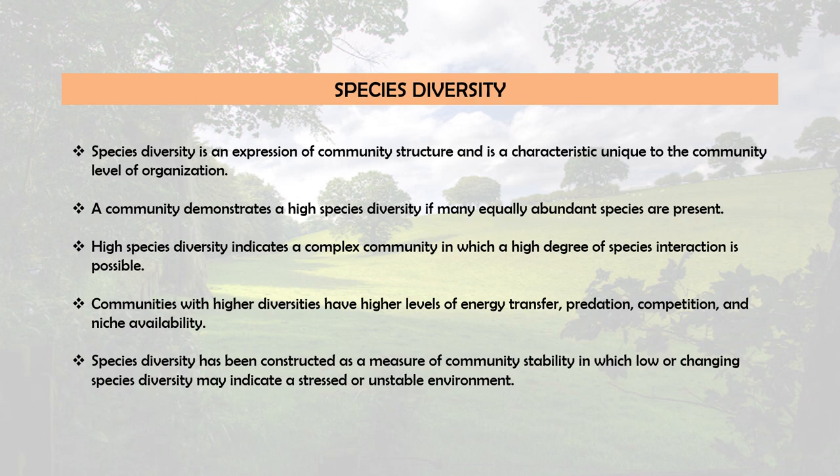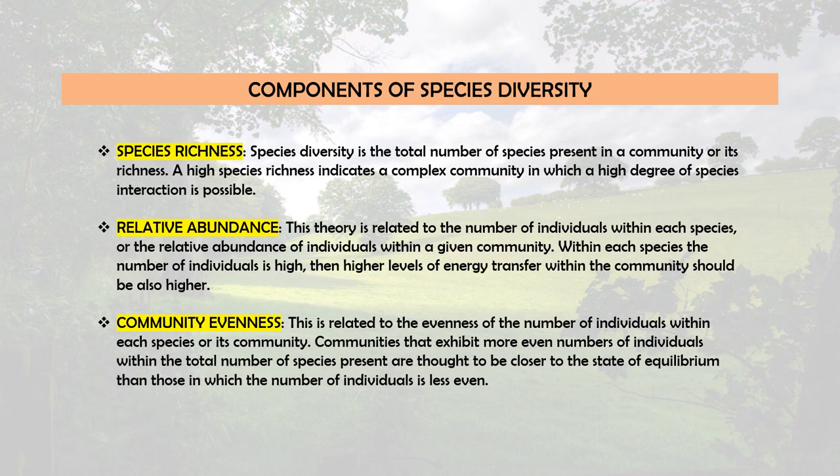The components of species diversity take into account mainly three different ecological phenomena: species richness, relative abundance, and community evenness. When viewed separately, each of these parameters reveals valuable ecological insight, and together they provide an overall picture of community structure.